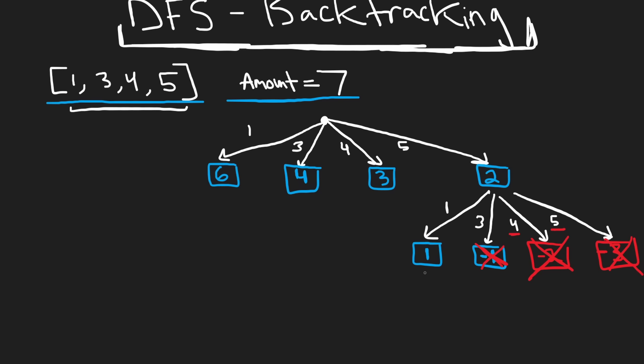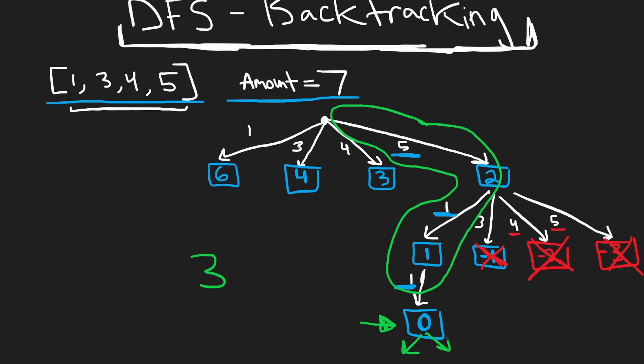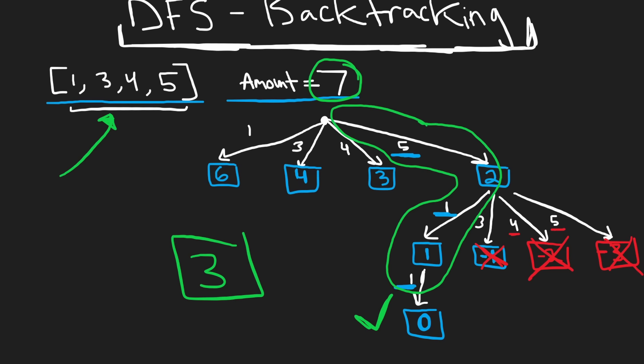From the remaining one in the five-branch, choosing a one coin finally gets us to zero. So we took a five, a one, and another one — three coins total. We found a valid solution: we can sum to seven using three coins, and we set our current minimum to three.